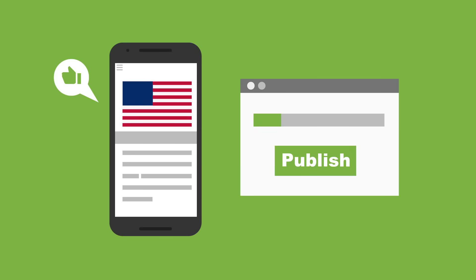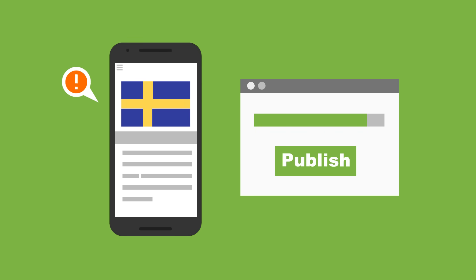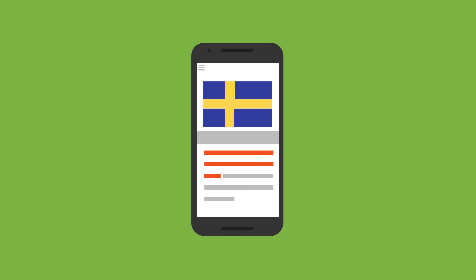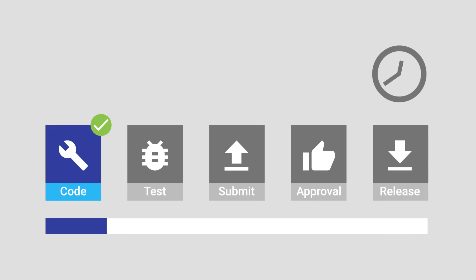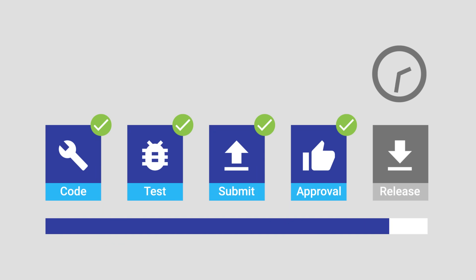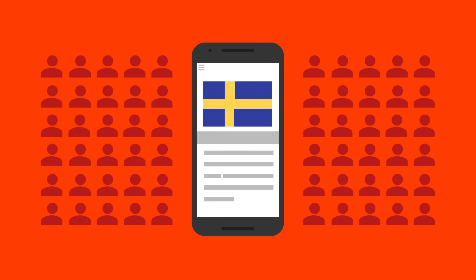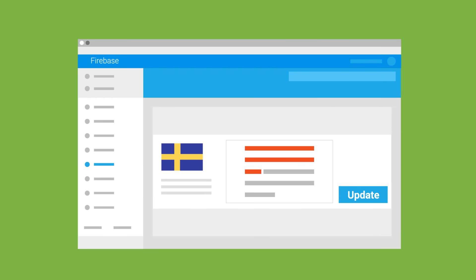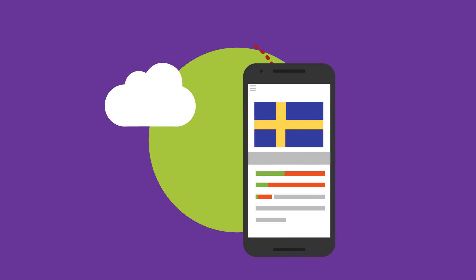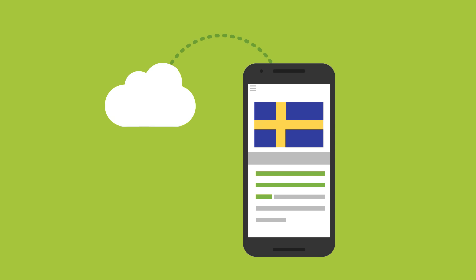For instance, say you've just pushed your app out to the world and you suddenly discover that your Swedish text contains some offensive language. Fixing that text the old-fashioned way would mean creating a new build and going through the entire publishing process again — something that could take days, which is an awfully long time to have 9.2 million people cursing your name. But if your app uses Firebase Remote Config, you could change that text in the cloud through the Firebase console. The next time your users fire up their app, Remote Config will grab the latest values, update your app's text, and just like that, you've averted a major international crisis.